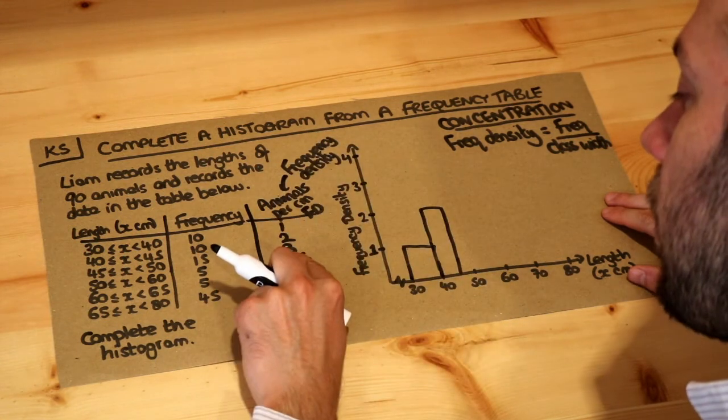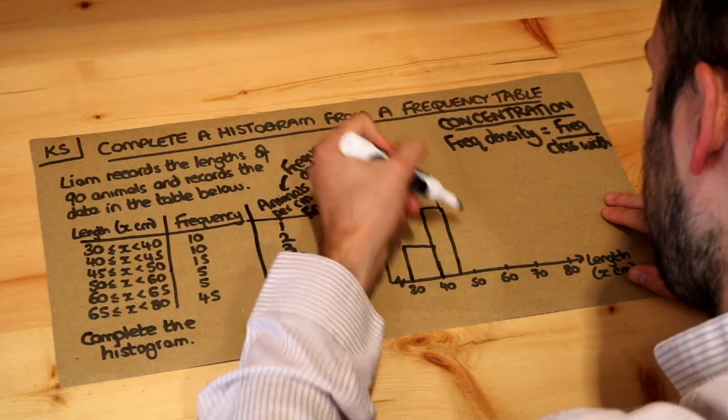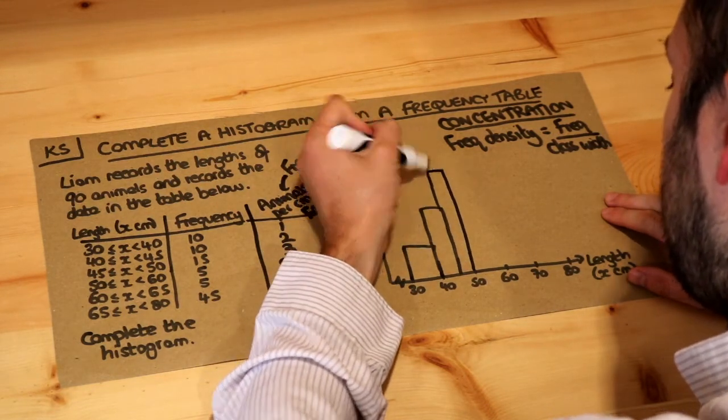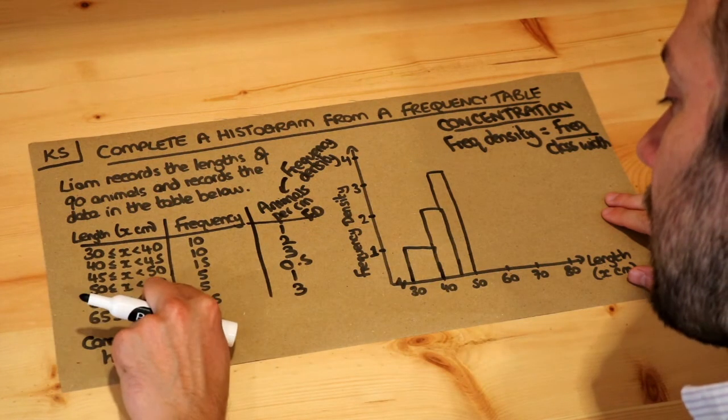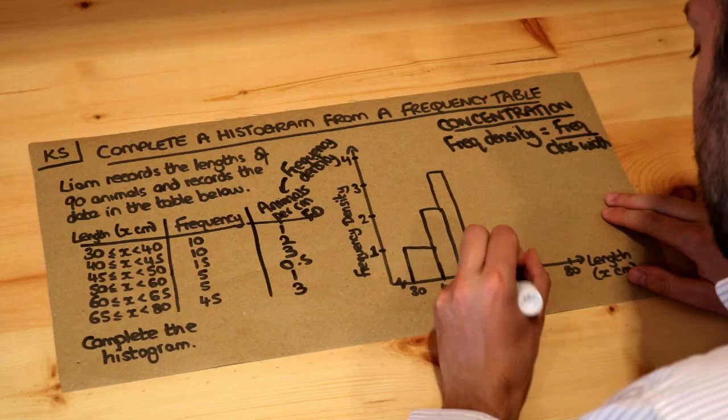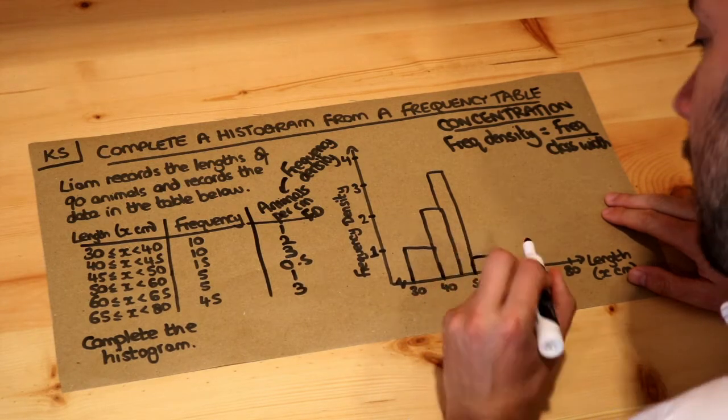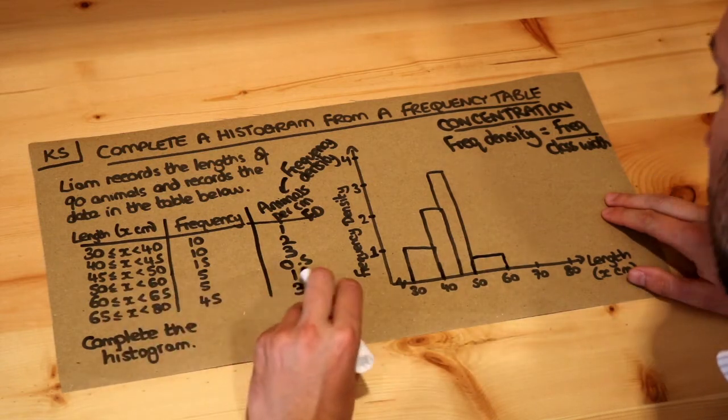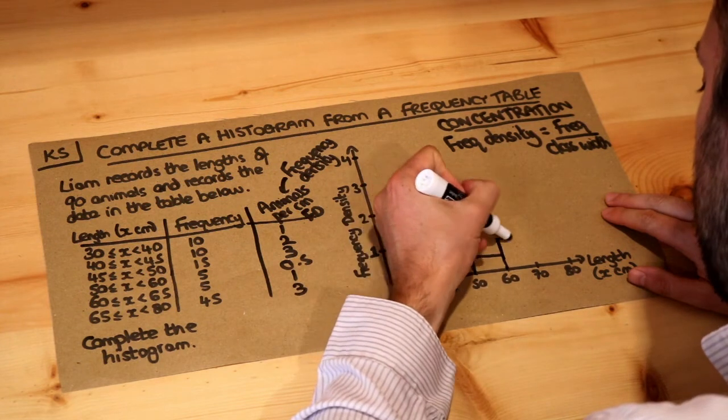Then we've got a frequency density of 3 for 45 to 50. So 45 to 50, that's 45, that's 50. Then 50 to 60, the frequency density is 0.5. So 50 to 60 only up to 0.5 which is like here. Then 60 to 65, frequency density is 1. So that would just be up to here.